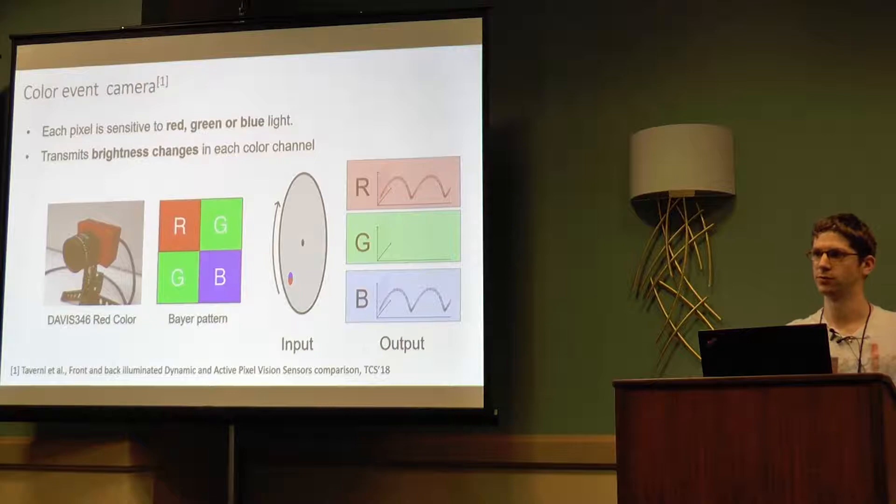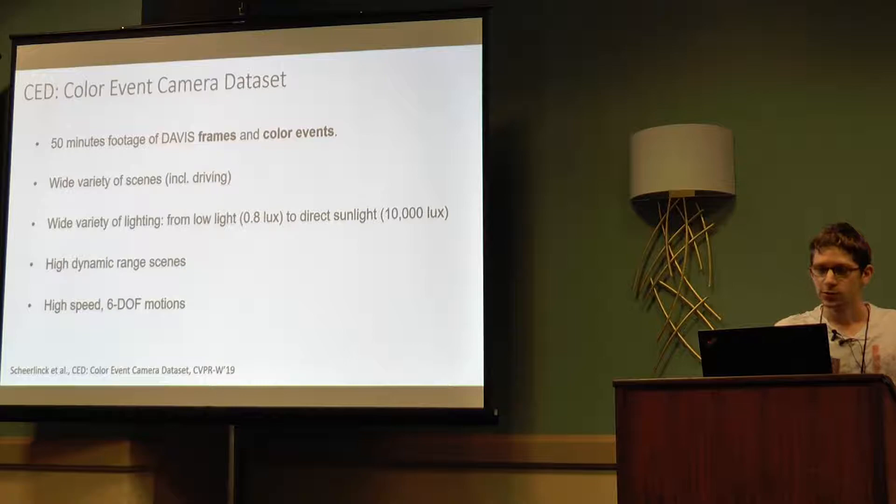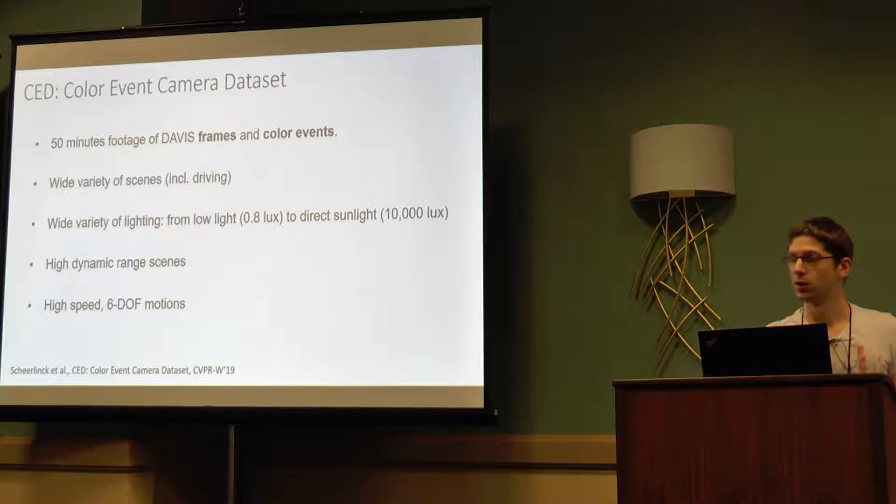For example, in this color circle here you would get events only on the blue or the red part of the moving circle. In this work we introduce the first color event camera dataset, which contains about 50 minutes of footage with both color events and color Davis frames in a wide variety of scenes and lighting, including high dynamic range conditions and very fast motions.